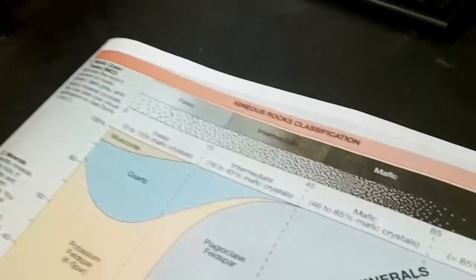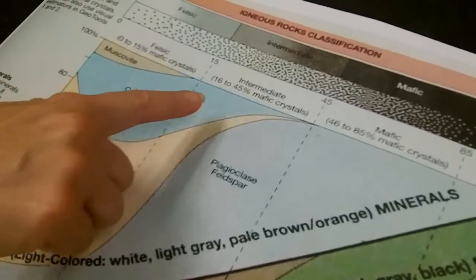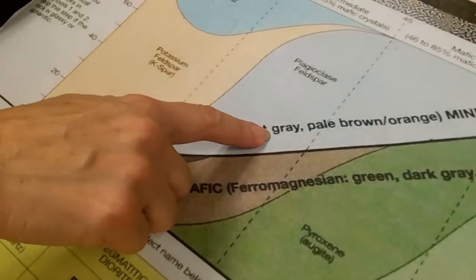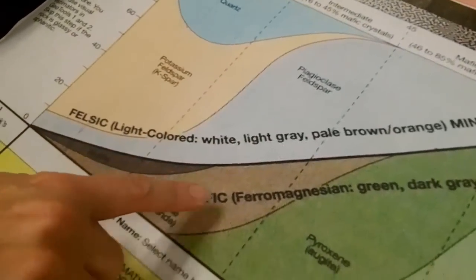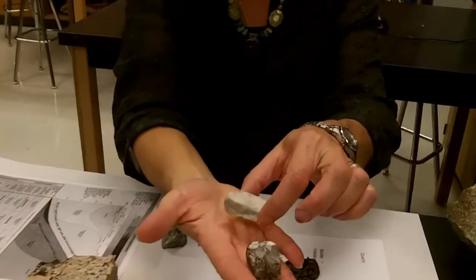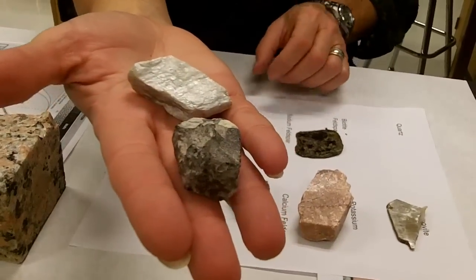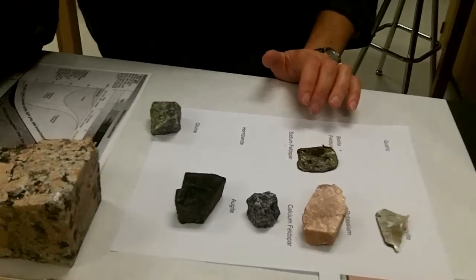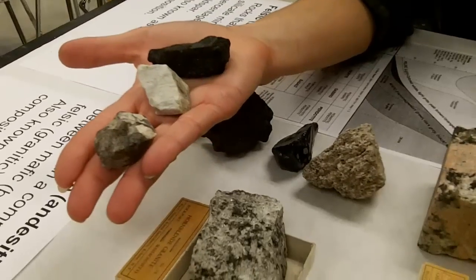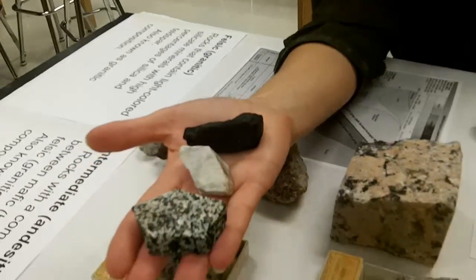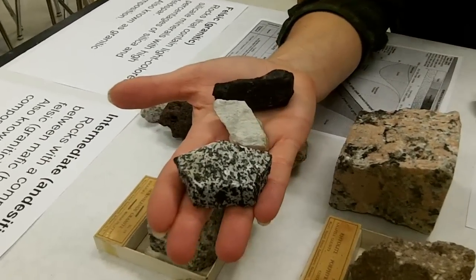Jumping to the intermediate category: we have some quartz present, some potassium feldspar, lots of plagioclase feldspar — white to light gray in color — some hornblende and maybe some augite. So we're going to be looking for quartz, some of the feldspars, and some hornblende in these rocks. Another rock typically in the intermediate category: if we take the quartz out and just look at those two minerals, can you see them in that rock? Yeah.